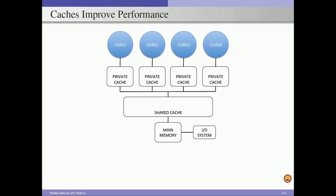Cache memory improves overall performance by reducing the number of times we access main memory. Whenever required data is placed in the cache memory closer to the processor, we minimize trips to memory and improve performance. Most applications also exhibit spatial and temporal locality, and we exploit this locality by using cache memory.